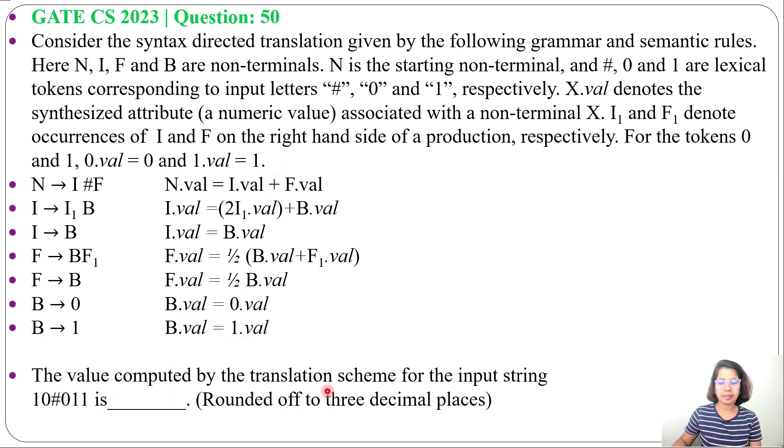The value computed by the translation schema for the input string 1, 0, #0, 1, 1 is blank, rounded off to 3 decimal places. First, I will create the normal syntax tree. Then, I will apply the semantic rule.